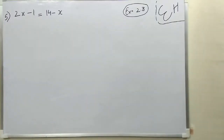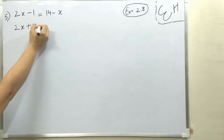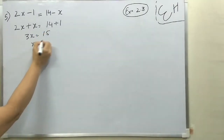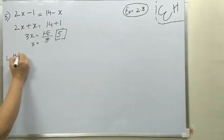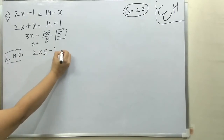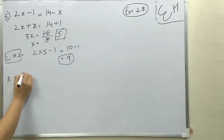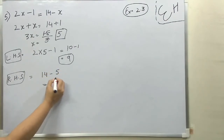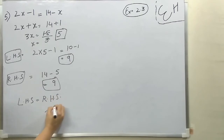Question number 5. 2X minus 1 is equal to 14 minus X. We will bring minus X here; it will become plus X. And minus 1 there; it will become plus 1. So 3X is equal to 15, giving X is equal to 15 divided by 3, which is 5. The value of X is 5. LHS: 2 into 5 minus 1 is 10 minus 1, which is 9. RHS: 14 minus 5 is also 9. LHS is equal to RHS — your answer is correct.